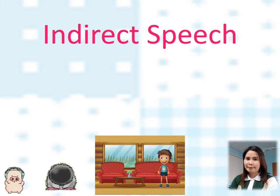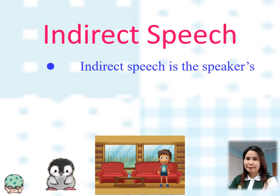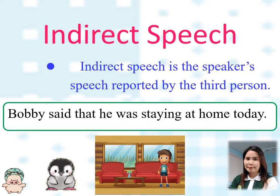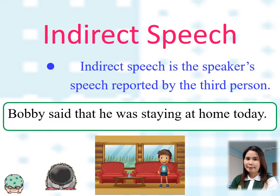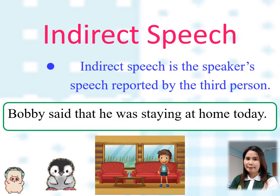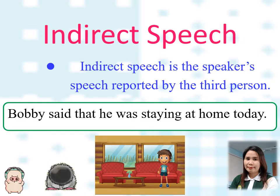Now, let's have indirect speech. Indirect speech is the speaker's speech reported by the third person. The second statement from the previous examples is an example of reported or indirect speech: Bobby said that he was staying at home. It is a reported speech because it is a restatement of what the speaker said. Notice that the quotation marks have been removed because the statement had been paraphrased.